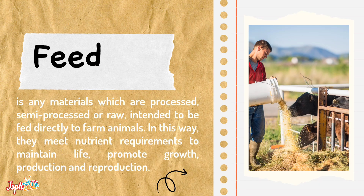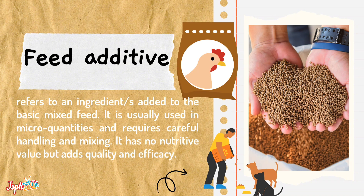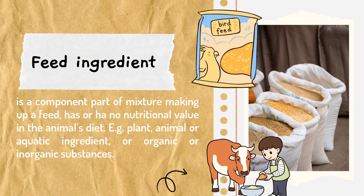For feeding management of poultry and livestock: feed refers to any materials — processed, semi-processed, or raw — intended to be fed directly to farm animals. Feed additive refers to ingredients added to the basic mixed feed, usually used in micro quantities and requiring care for handling and mixing. Feed ingredients are component parts of a mixture making up the complete feed, having nutritional value in the animal's diet.